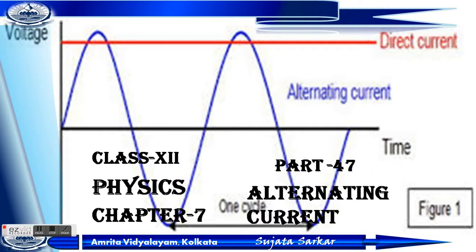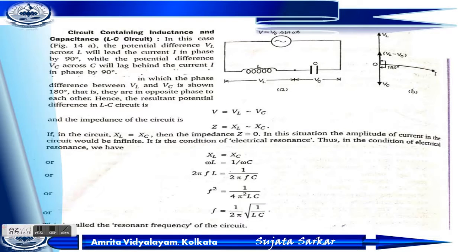Namashiva students, today I will start part 47 from chapter 7, alternating current. My today's topic is circuit containing inductance and capacitance. This is an inductor L and this is a capacitor C, and here the voltage V equals V₀ sine omega t because this is an AC voltage. The potential difference across L is VL and across C is VC.